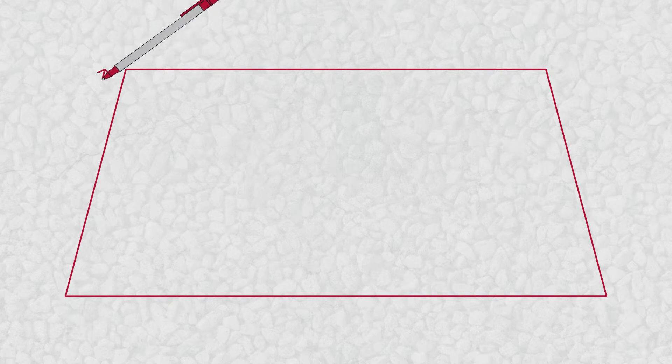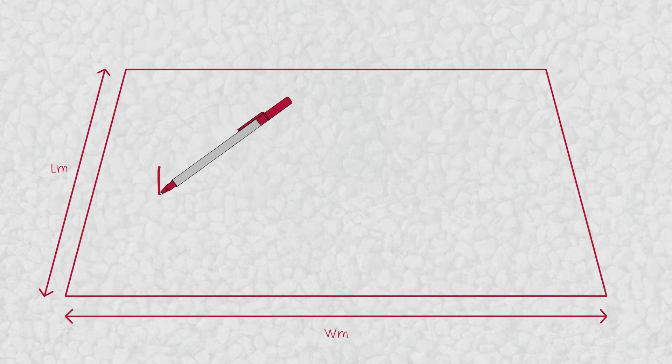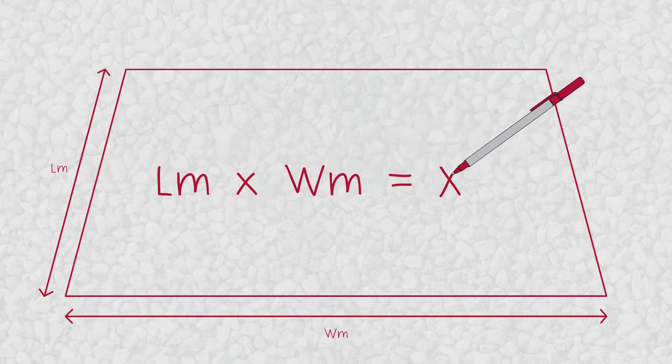Measuring is straightforward and here we'll show you some examples. For a standard straight driveway, measure the length and width in meters and multiply the two measurements to get the area in square meters.